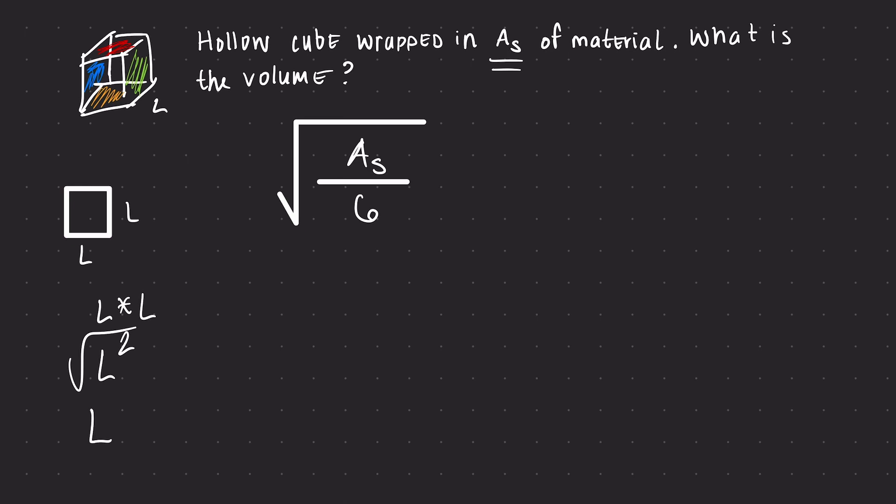And so by square rooting this value, we get one side. And then furthermore, we could actually cube this because we want the dimensions of the cube. And we know that volume is equal to length times width times height.